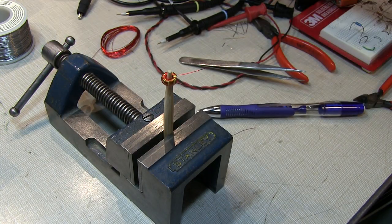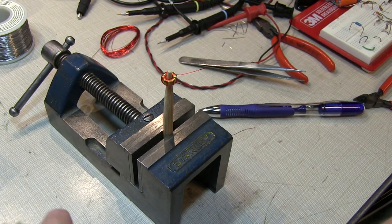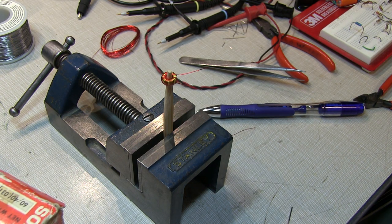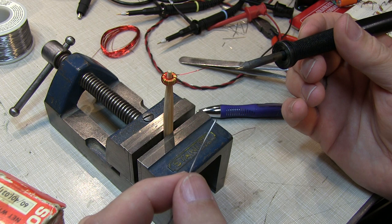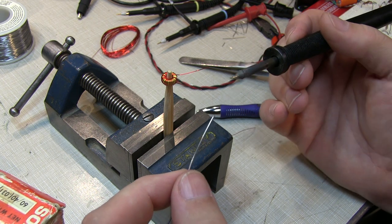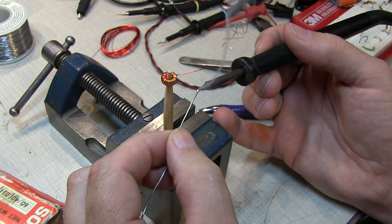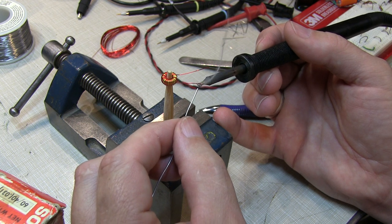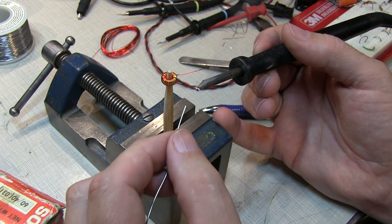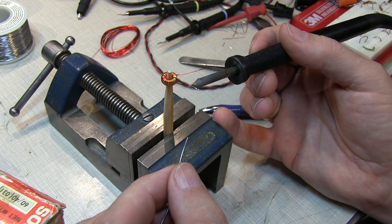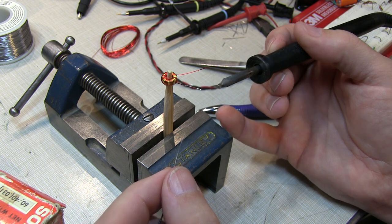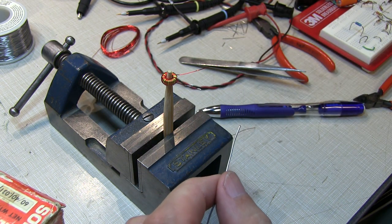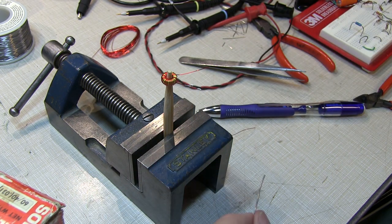Sometimes stripping the enamel off of these enameled wires can be tricky. You can use some emery paper. Sometimes you can use an X-Acto knife to scrape it off. But you always run the risk of damaging the wire. And a lot of these enameled covered wires can be heat stripped. And you basically just create a nice big blob of solder and kind of embed the wire at the end of the solder there. And that will boil away the enamel and leave you with a nice tinned wire. It doesn't work for all enamel types but it does work for many of them.